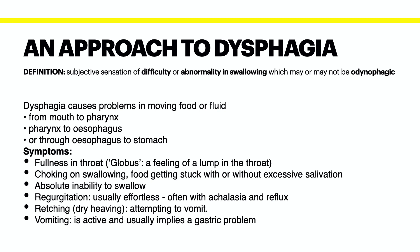They might have retching or dry heaving, which is when the patient attempts to vomit and may be associated with nausea but is not actually coming up, and that may be associated with a bolus obstruction. Or the patient could have dysphagia with vomiting, which is active and usually implies a problem lower down with the stomach.